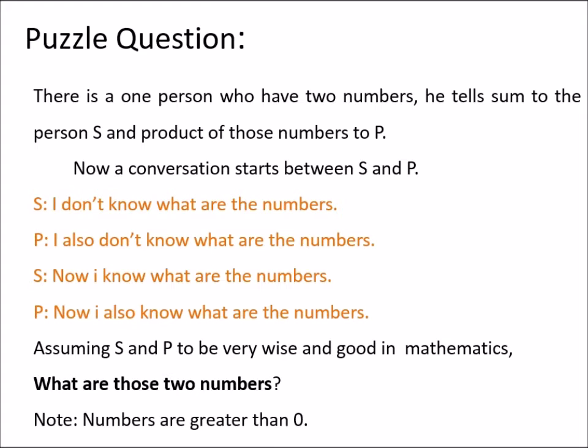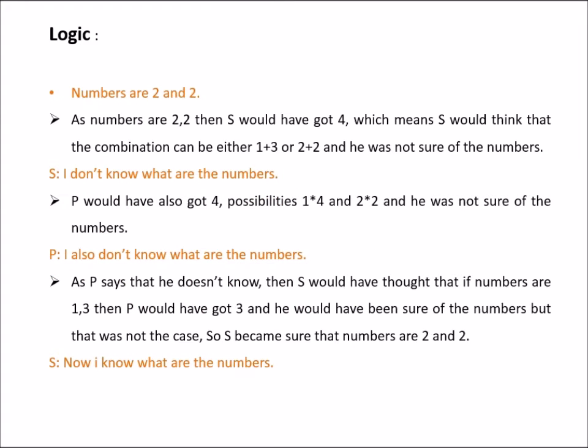The numbers are greater than 0. The numbers are 2 and 2. As the numbers are 2 and 2, then S would have got 4, that is the sum of those two numbers is 4.